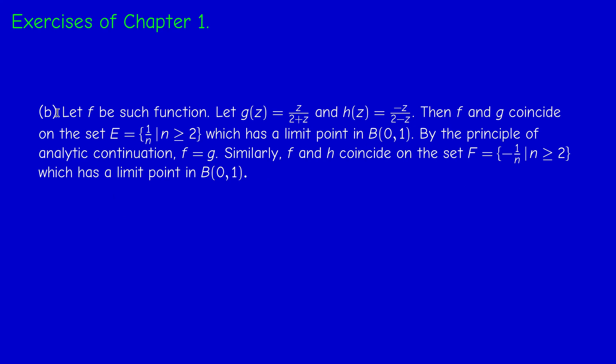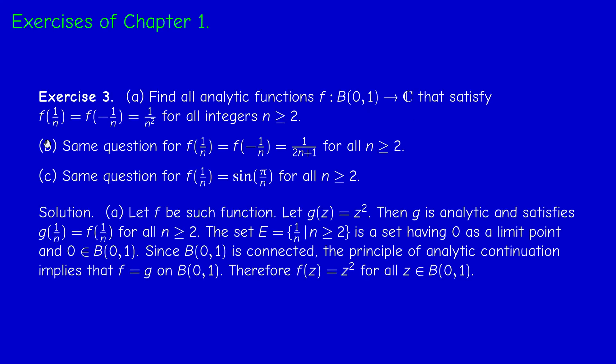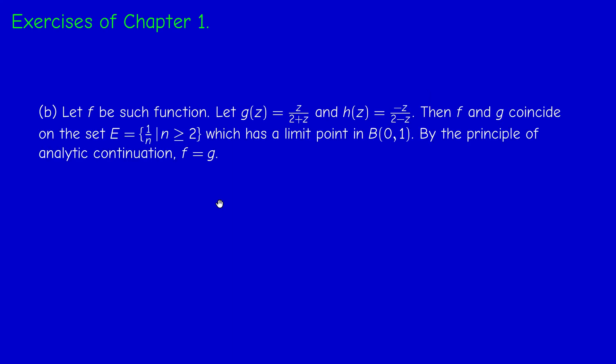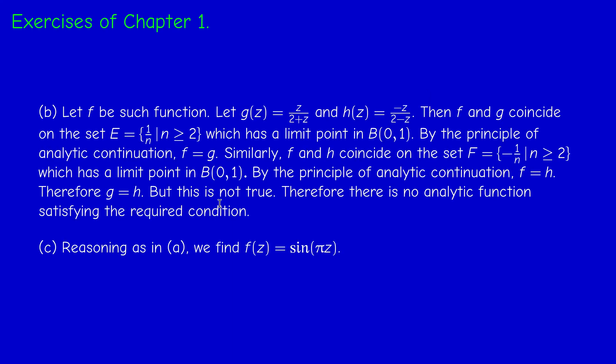Now, question C is very similar to question A. Of course, we already have one candidate, which is sine pi z, just replace 1 over n by z. So if you argue as in question A, we find, again, one analytic function, which is sine pi z. So this concludes the exercises of chapter one.